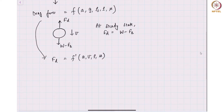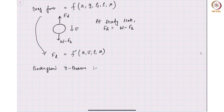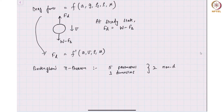Now if I use Buckingham Pi theorem — I will assume that all of you know Buckingham Pi theorem; there are several good textbooks in fluid mechanics which explain it. If you use Buckingham Pi theorem, there are five parameters here and three dimensions, and therefore I get two non-dimensional groups. The three dimensions are mass, length, and time, and therefore I have two non-dimensional groups.